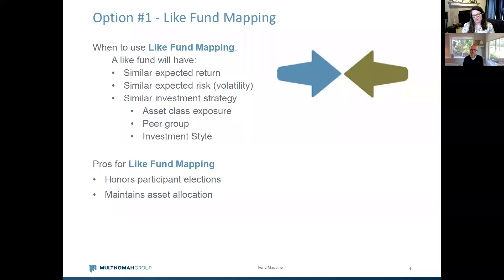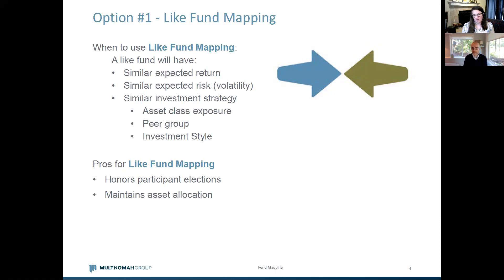The other time you can do like fund mapping is on a larger scale. A client that had worked with us for a couple of years decided to do a request for proposal and selected a new record keeper. The investment menu at their current record keeper was in good health, so we didn't expect to make many changes. But with the platform change there was an opportunity to switch to lower-cost index providers and, because of some platform limitations, we needed to switch providers for the ESG funds — about half a dozen changes as part of the broader transition.